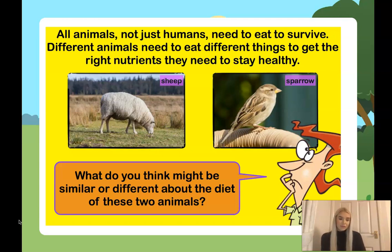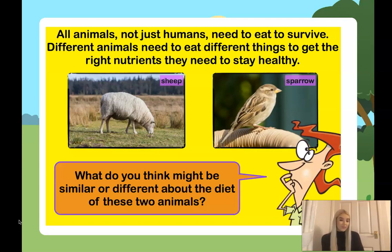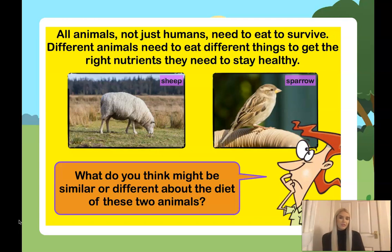On the screen I've got two animals: a sheep on the left and a sparrow on the right. What do you think might be similar or different about their diets? Diet means what they eat — what they consume. Sheep mostly eat grass, and that's what their diet mainly consists of, whereas a sparrow eats a variety of things such as insects and seeds. That's what's different about these two animals.